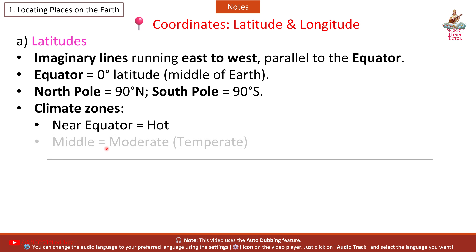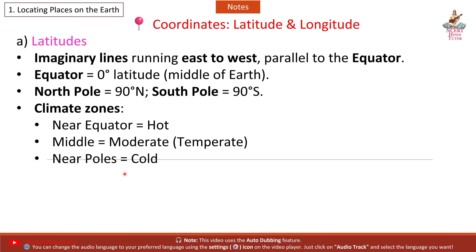Climate zones based on latitude: Near the equator — hot. Middle regions — moderate, that is temperate. Near the poles — cold.